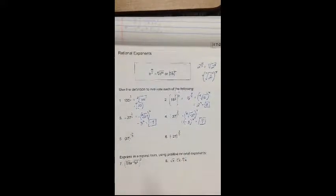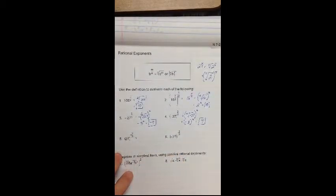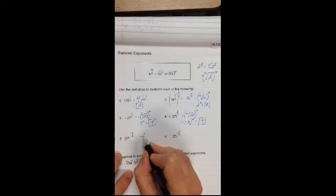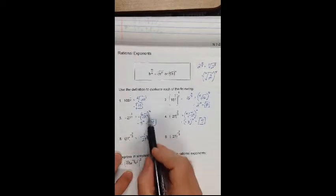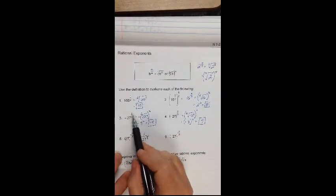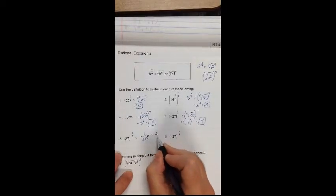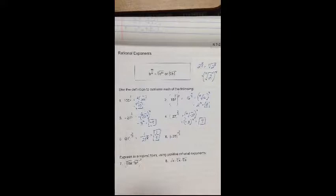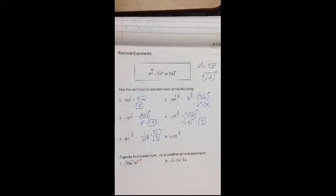27 to the negative 2 thirds. Remember that a negative exponent means I take the reciprocal: 1 over 27 to the positive 2 thirds. We just said 27 to the 2 thirds is equal to 9, so this is just going to be 1 ninth. I got that 27 to the 2 thirds from number 3.